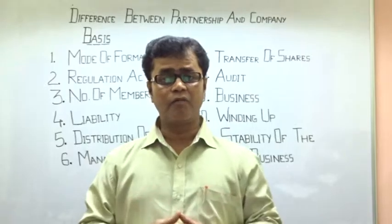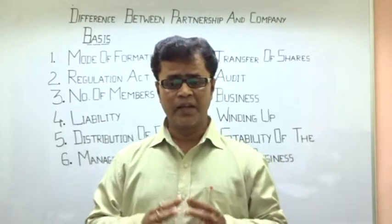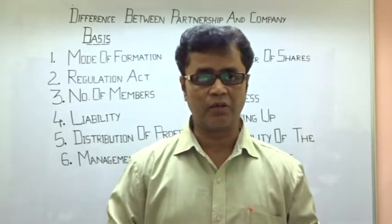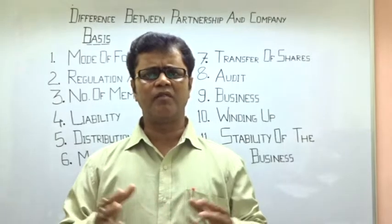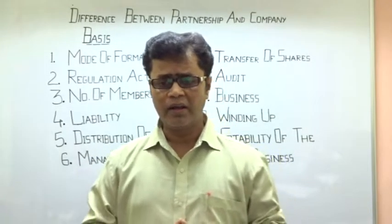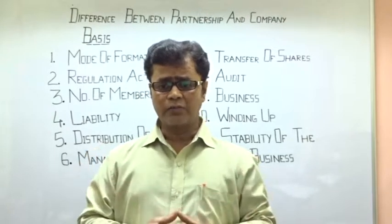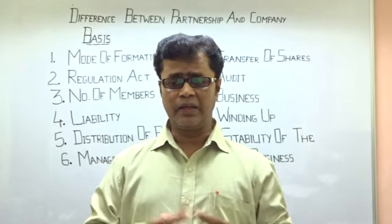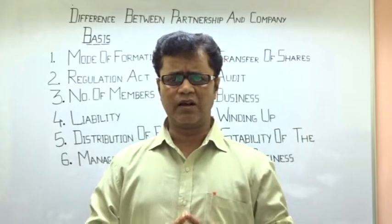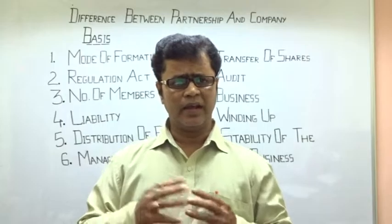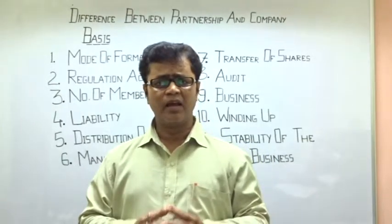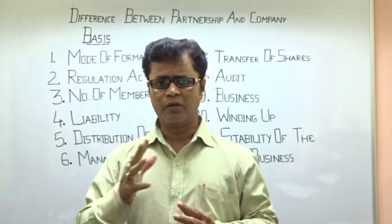The last point is stability of the business. Partnership is affected by the death, retirement, or insolvency of a partner — these events have a significant effect on the stability of the partnership. In the case of a company, the death, insolvency, or transfer of shares by a shareholder does not affect the continuity of the company. The company continues to operate, as none of these events affect its existence. After this, we will discuss the kinds of companies.